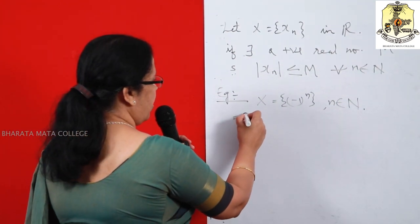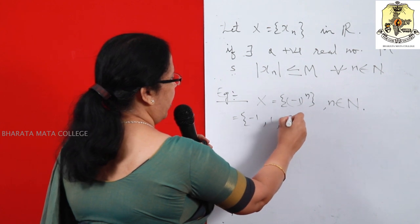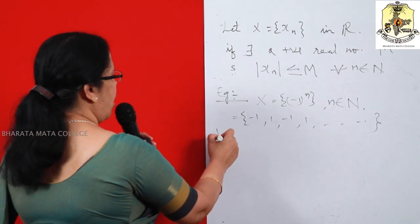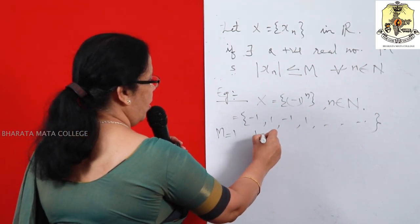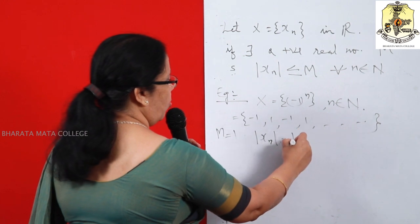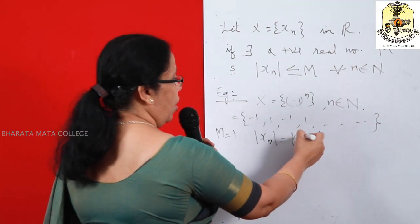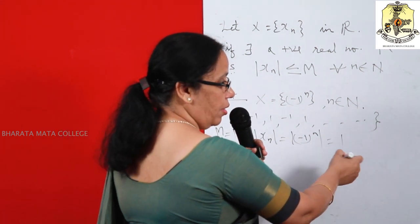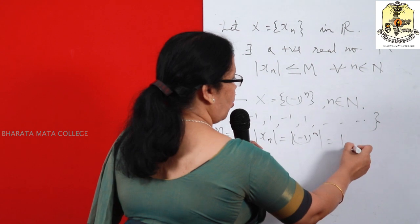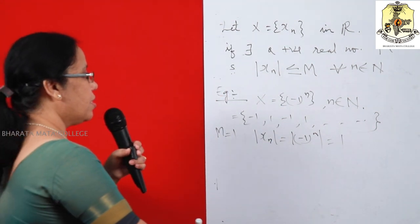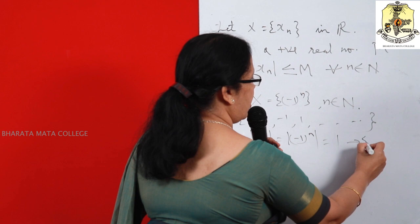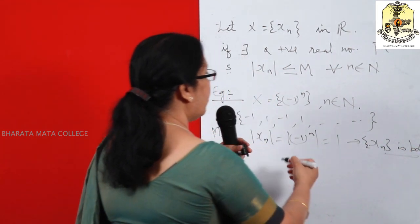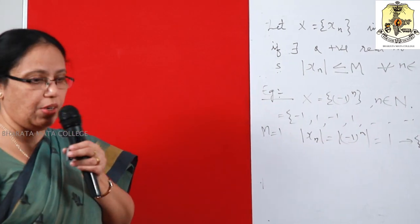We know the terms of this sequence are -1, 1, -1, 1, etc. We can choose M = 1, so that modulus of X_N = modulus of (-1)^N = 1 for any value of N. So modulus X_N = 1 ≤ M, meaning the sequence X_N is bounded. But it is not convergent — we can prove that it is not convergent.